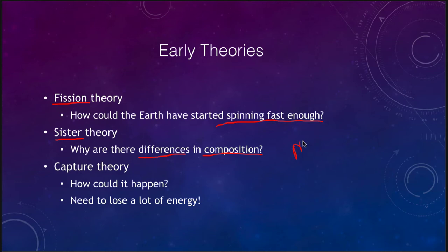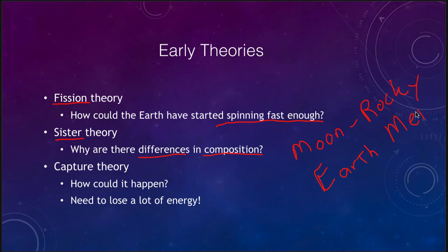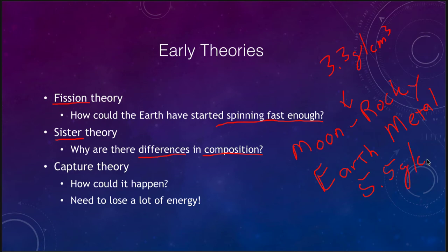The moon is rocky, while the Earth has more metal to it. Looking at densities, the moon's density is about 3.3 grams per cubic centimeter and the Earth's is about 5.5 grams per cubic centimeter — a big difference. You would think if they formed together they would be essentially the same, with the same proportions of rock and metal, because they formed at the same distance from the Sun.